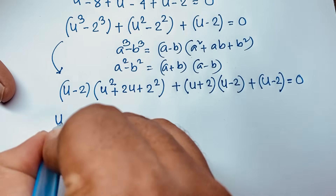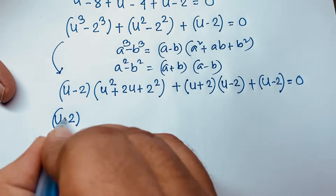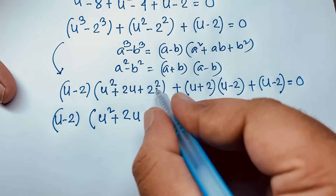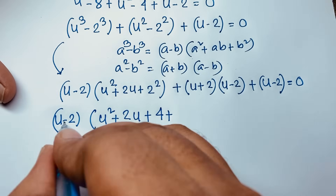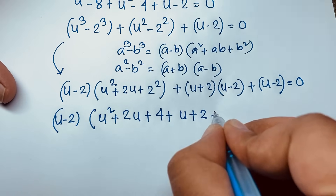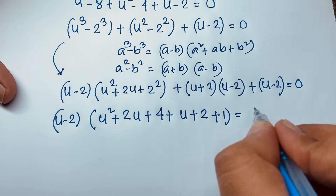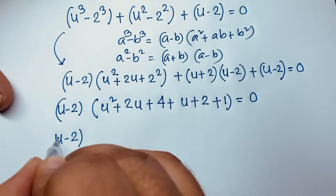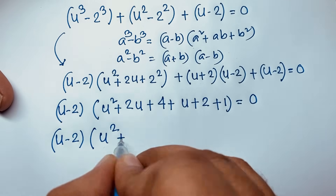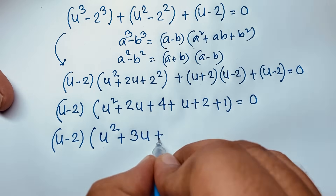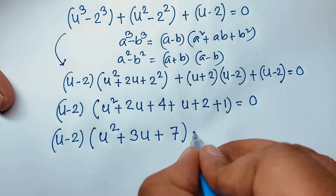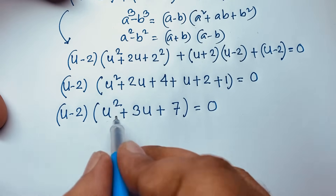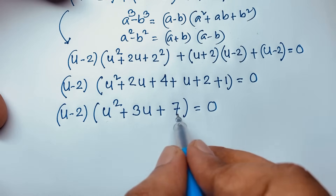Taking u minus 2 as common factor: (u - 2)(u² + 2u + 4) + (u + 2)(u - 2) + (u - 2) = 0. Factoring out (u - 2): (u - 2)(u² + 2u + 4 + u + 2 + 1) = 0, which simplifies to (u - 2)(u² + 3u + 7) = 0. We now have two cases.